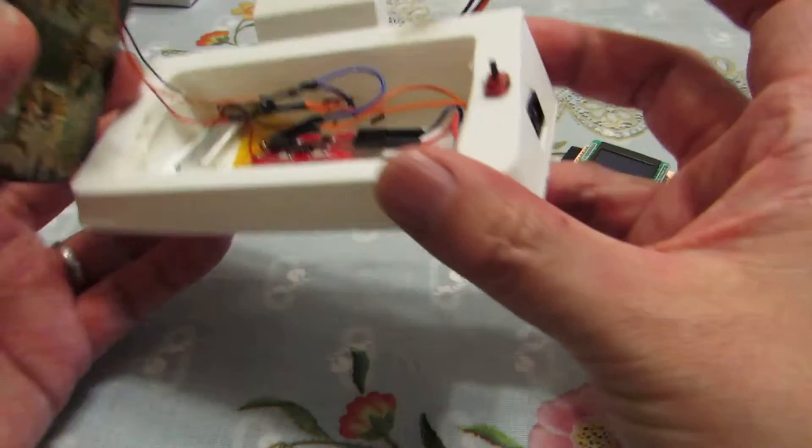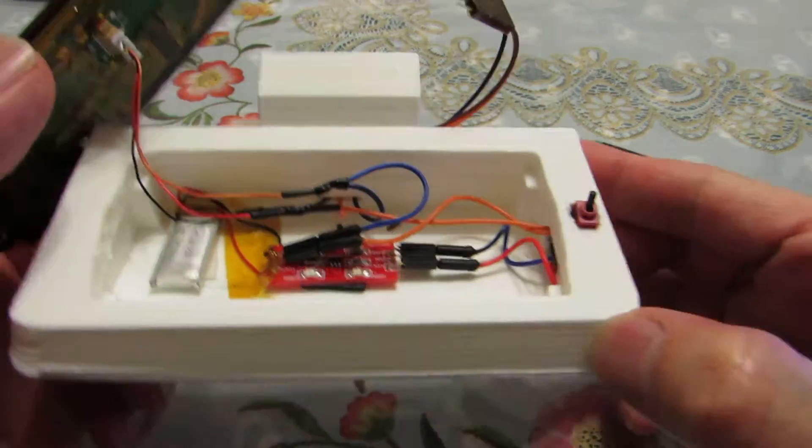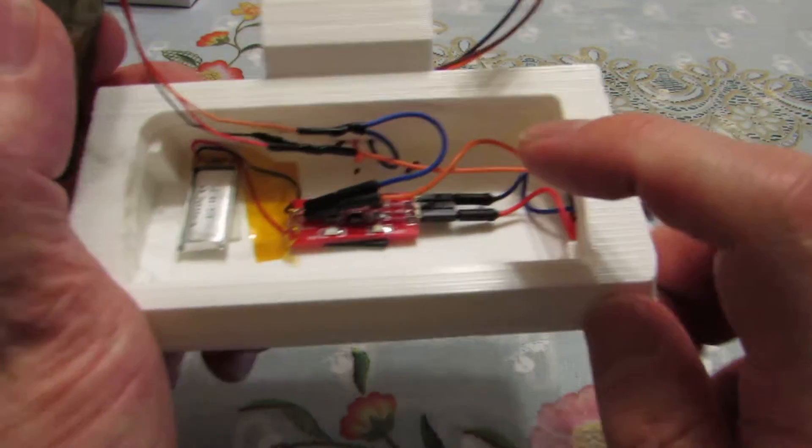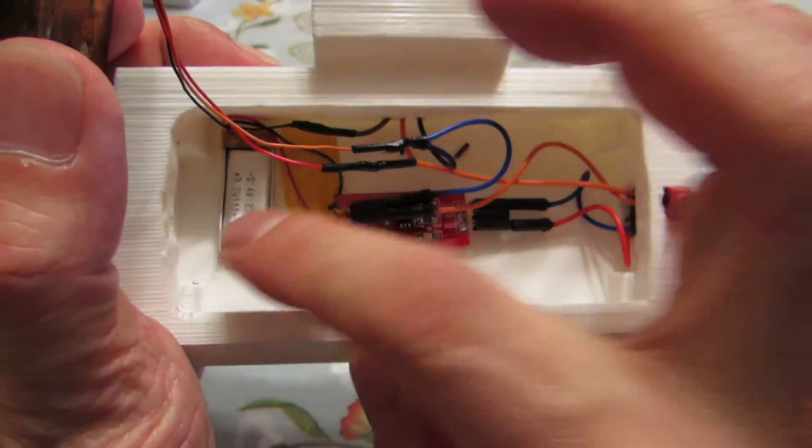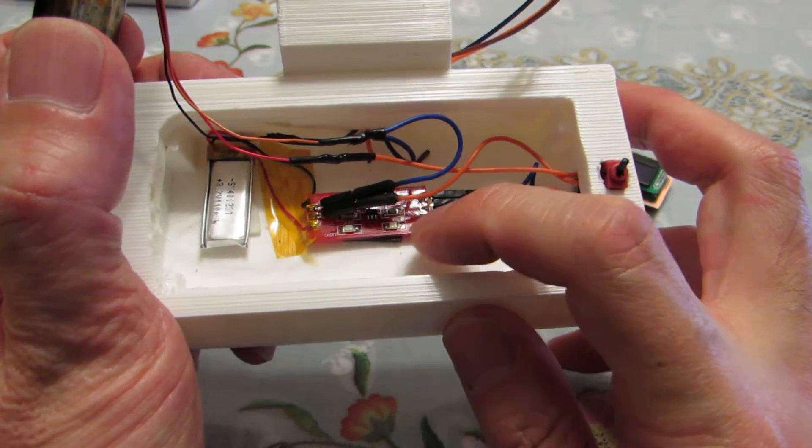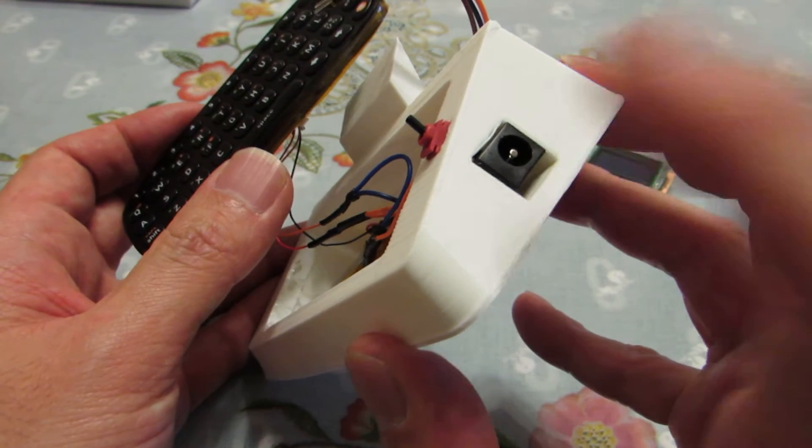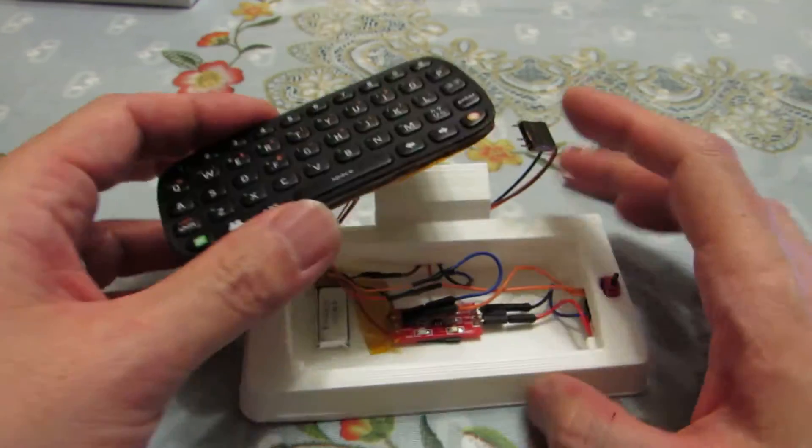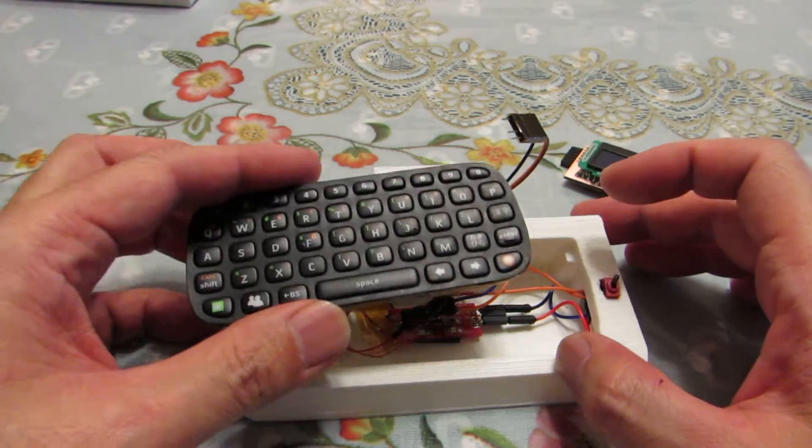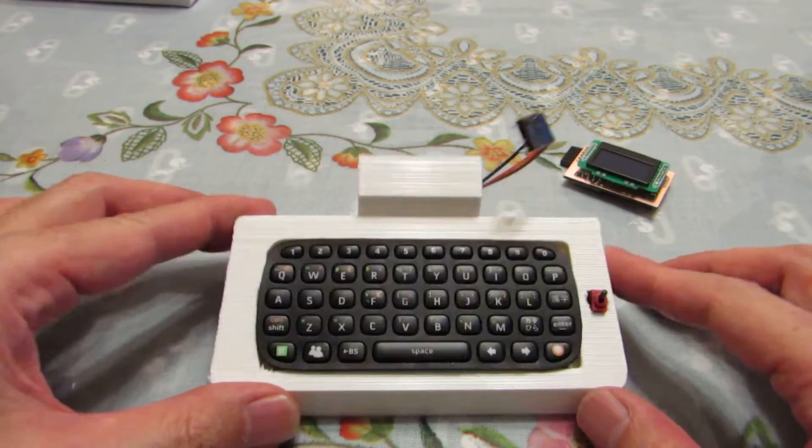So I made this model using 3D printers. Inside there is a lithium polymer battery and also some charging circuit. Here I put the charging terminal - by adding 5 volts, the battery inside is charged. I can put the keyboard like this, and here is a stage.